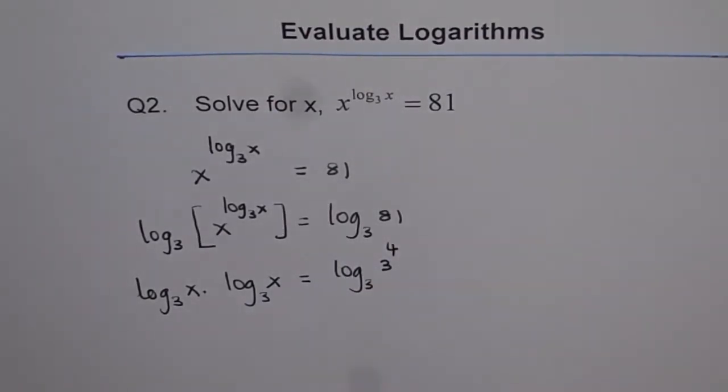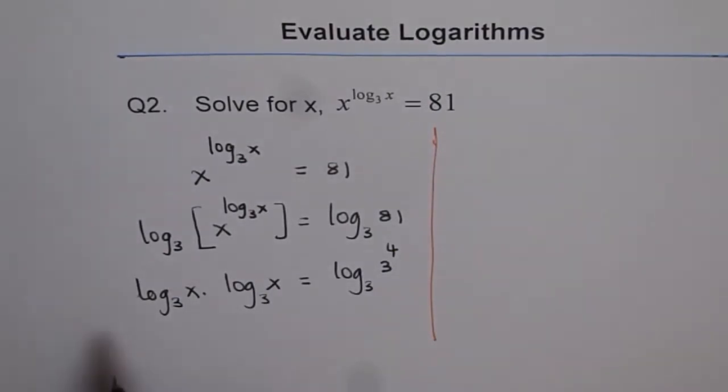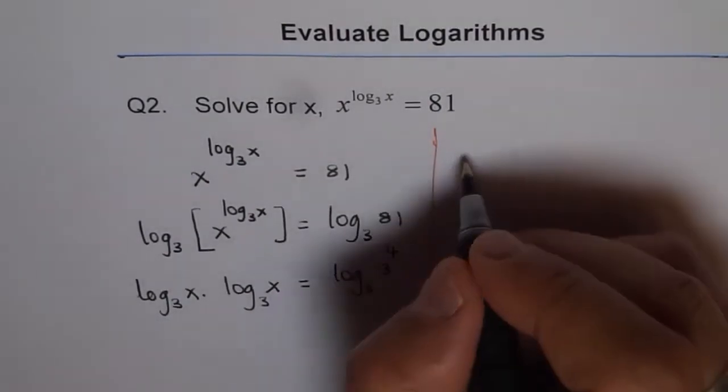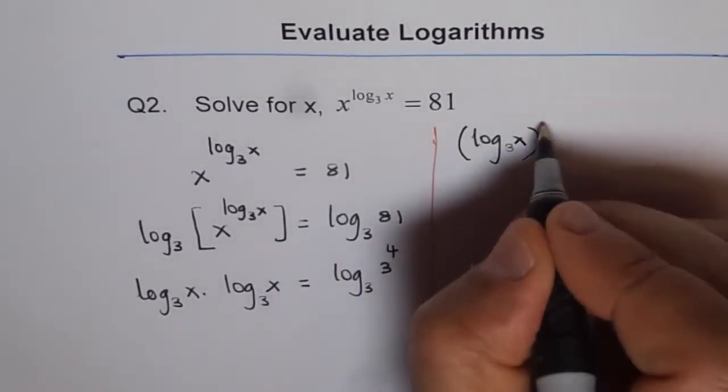Now, on the left side, let me take it on this side of the page to solve it further. So, we have log base 3 of x times log base 3 of x. So, that is as good as writing log base 3 of x whole square.